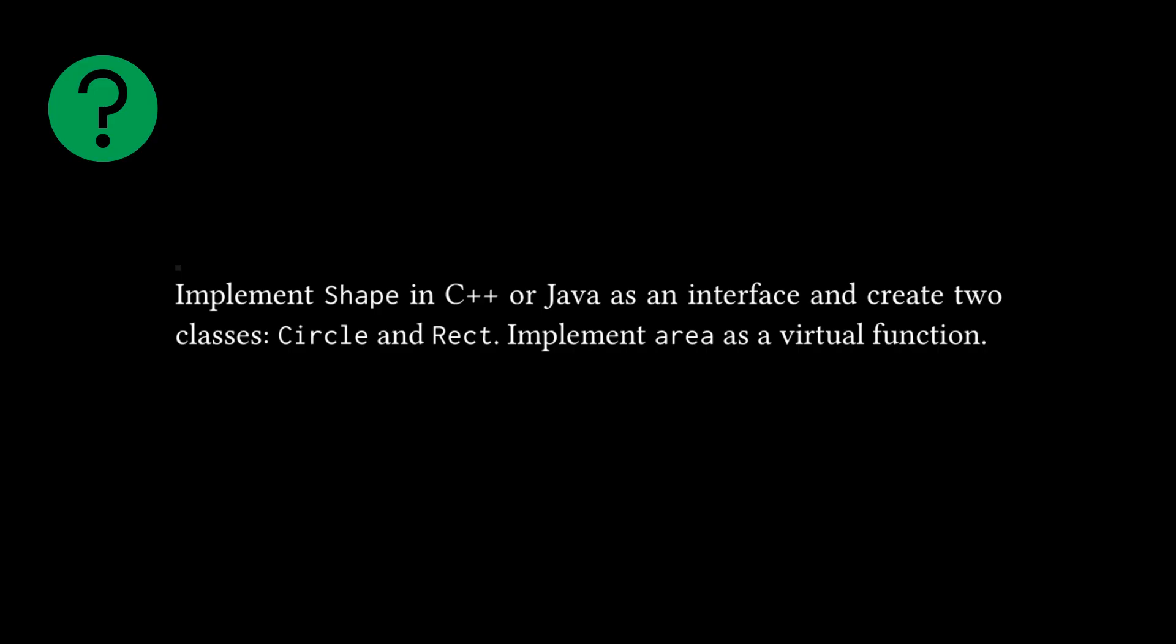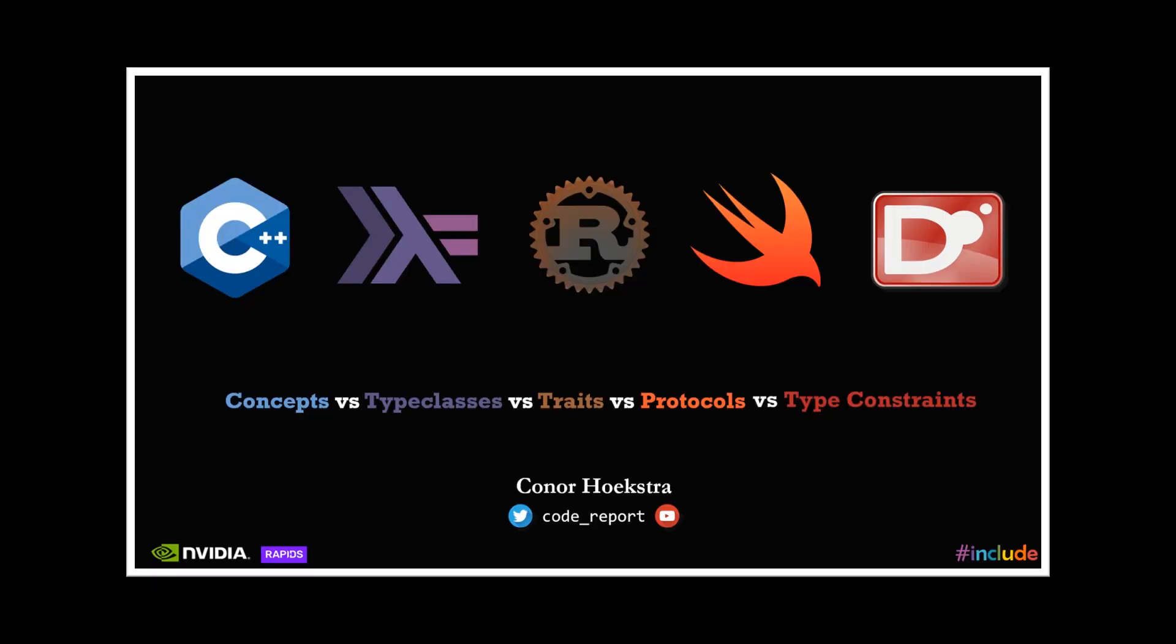Moving on to question number two, three, and four sort of all combined into one. This is an abbreviated version of the question, but it says implement shape in C++ or Java as an interface and create two classes circle and rect, which are for circle and rectangle, implement area as a virtual function. So I'm not going to do this in C++ or Java because coincidentally, I give a talk back in November of 2020, where I actually solved this question in five different languages by total coincidence. So C++, Haskell, Rust, Swift, and D. I will leave a link in the description to both the GitHub repo that has the code for all of those five solutions and the talk if you're interested in checking it out.